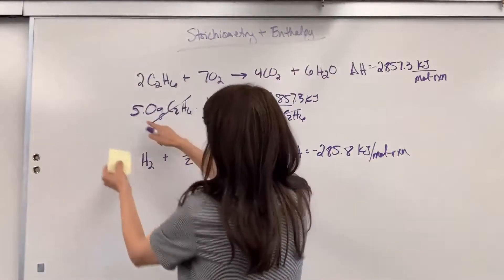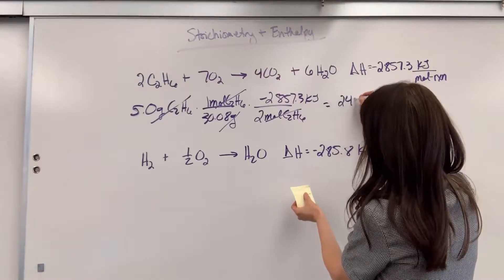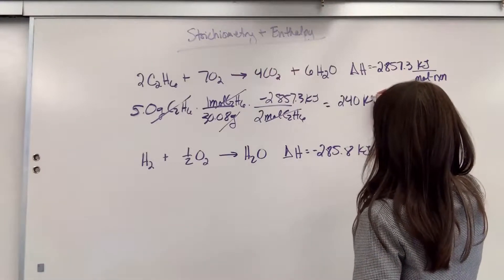So if we do that math, let's see, two sig figs right here, we will get 240 kilojoules.